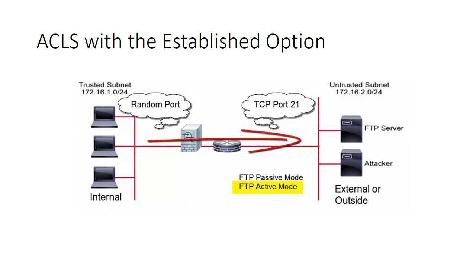An important issue to consider when discussing FTP is that it can run in two modes: FTP passive mode and FTP active mode. In FTP active mode, the client connects from a random port to the FTP server on TCP port 21. The FTP server will specify the client random port through the FTP control channel. The passive mode data channel is then opened with the client connecting to the server on a specified random port. In this case, both the control and data packets coming back from the server to the client have the ACK bit set.